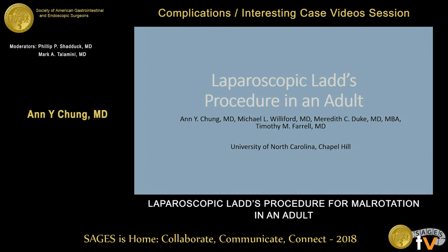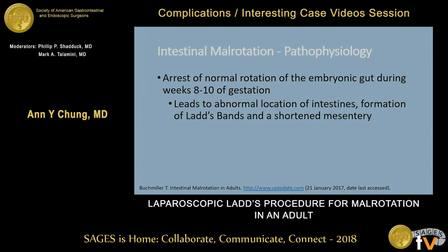This is a case of malrotation in an adult for which we performed a laparoscopic LADS procedure. Intestinal malrotation is a congenital condition caused by an arrest of abnormal rotation of the gut during fetal development. In normal development, the primary intestinal loop is pushed out into the area of the yolk stalk and begins a normal rotation of the bowel, twisting 90 degrees counterclockwise. During weeks eight to ten of gestation, the loop then returns into the abdomen with an additional rotation of 180 degrees counterclockwise. Any interruption of this pathway can lead to an aberrant location of the intestines, formation of LADS bands, and a shortened mesentery.